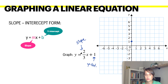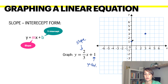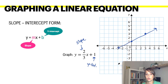Your slope, remember, is rise over run. 2 over 3 means you would go up 2 and then you would move to the right 3. Connect your coordinate points with a line and that will give you your graph of your linear equation.